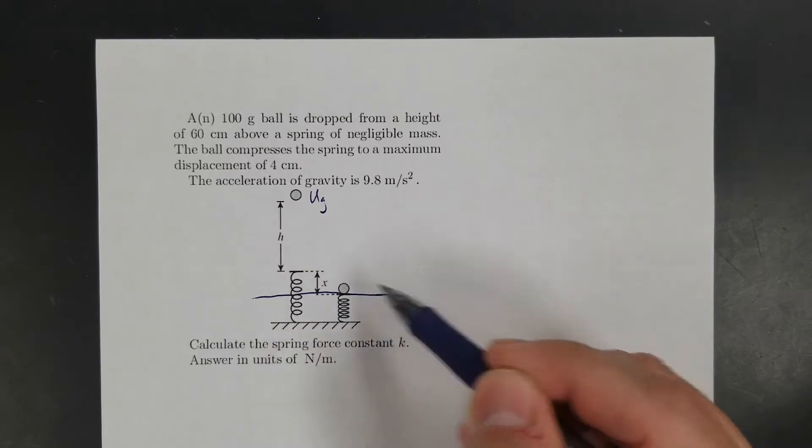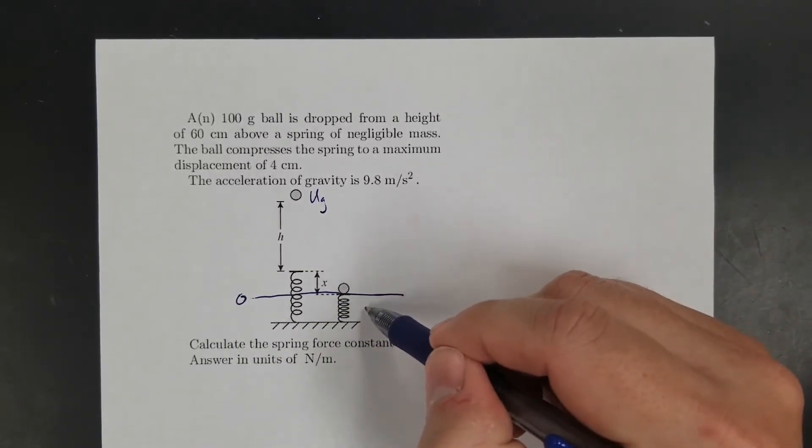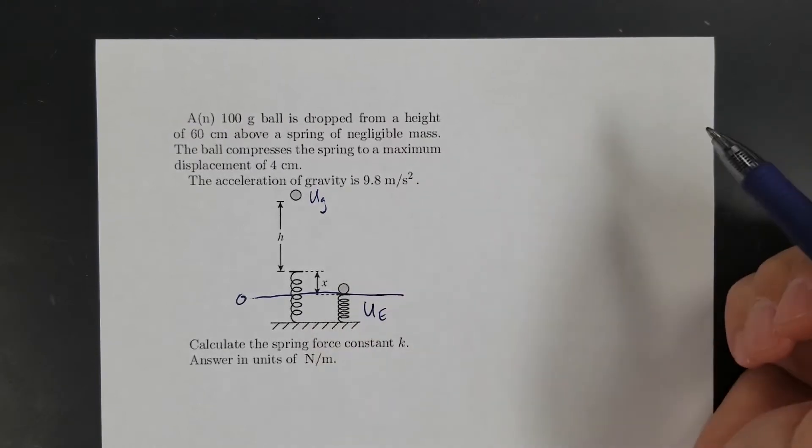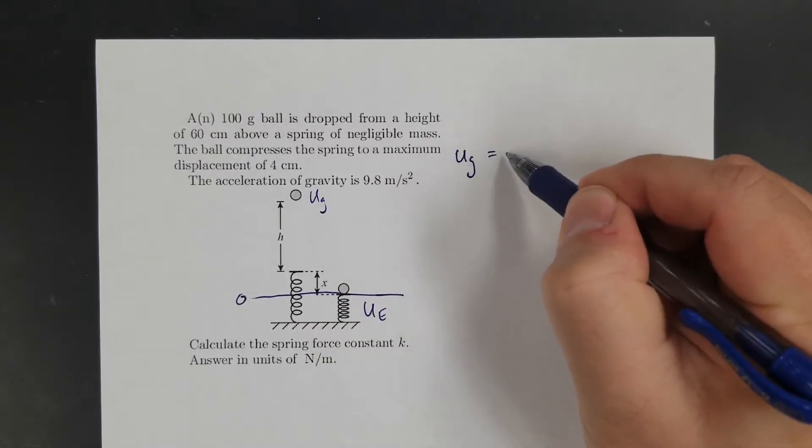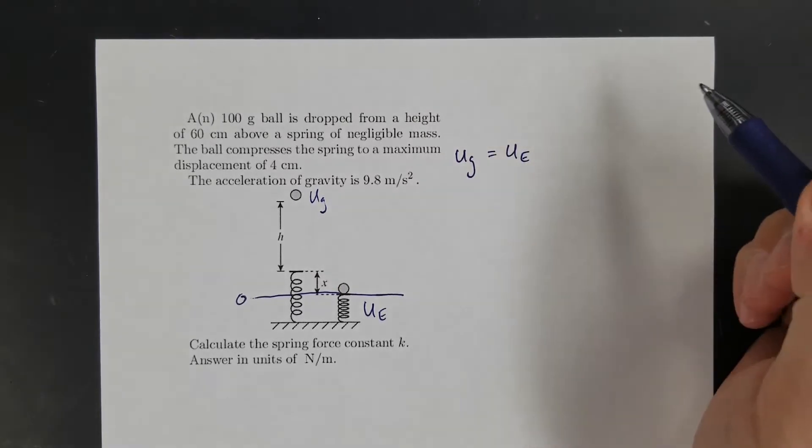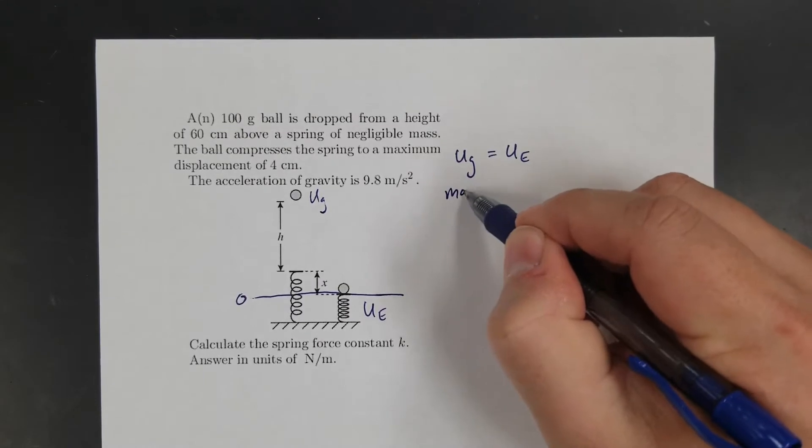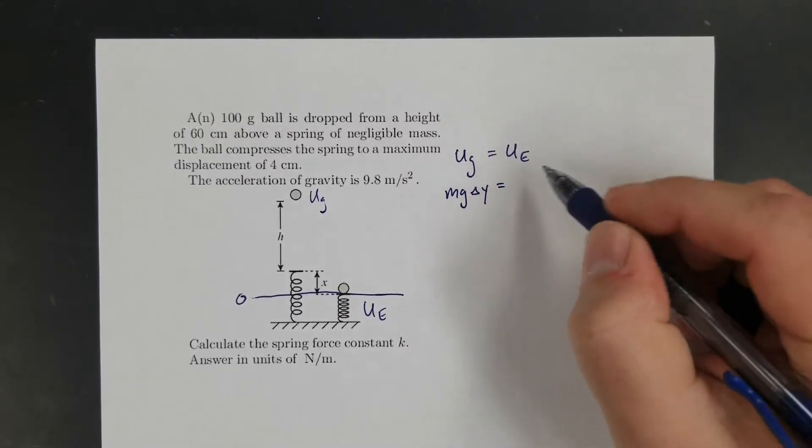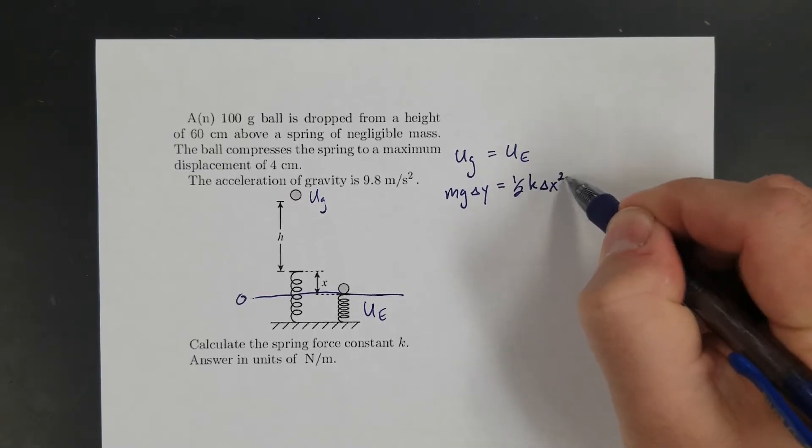I'm going to call this zero, and that way I can say it's all become elastic potential stored in the spring. So my equation would be gravitational potential equals elastic potential. Gravitational is mg∆y, equals elastic potential which is ½k∆x².